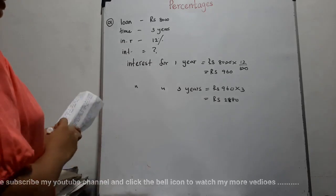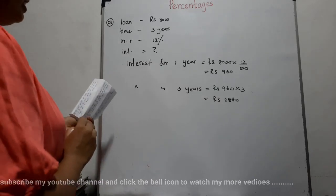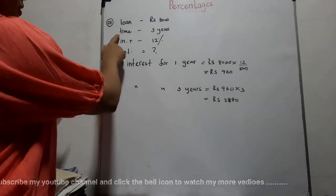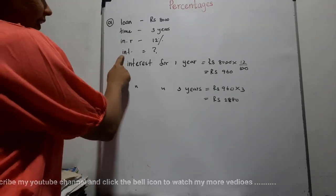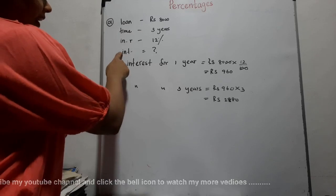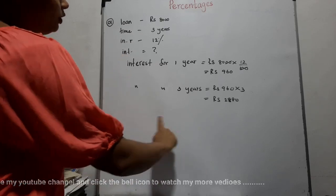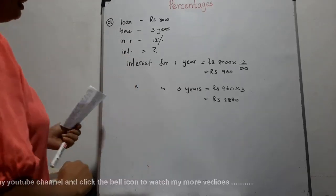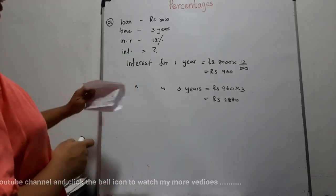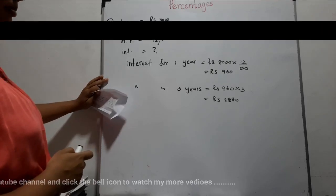In this question, you are given the loan amount, time, and interest rate, and you are asked to find the interest. This is the method for solving such a question. Now let's move to the 2nd question.